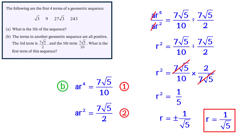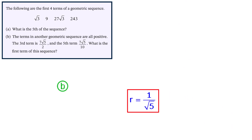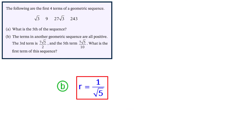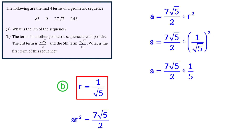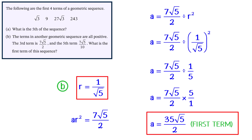If we took minus 1 over root 5, multiplying the terms in the sequence would result in alternating positive and negative terms. Now that we know the common ratio is 1 over root 5, we can find the first term A. Using the third term equation: AR squared equals 7 root 5 over 2. Rearranging gives A equals (7 root 5 over 2) divided by R squared. Substituting R equals 1 over root 5, squaring gives R squared equals one fifth. So A equals (7 root 5 over 2) divided by one fifth, which equals (7 root 5 over 2) multiplied by 5, giving A equals 35 root 5 over 2.